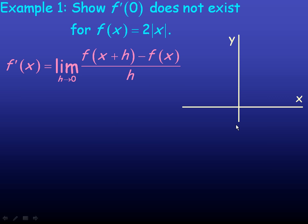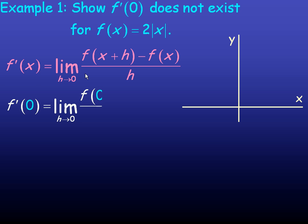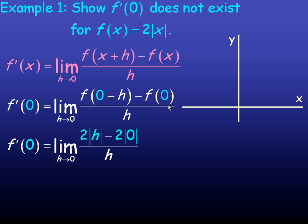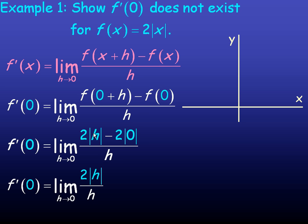In Example 1, we'll show that f prime of 0 does not exist for the function f of x = 2 times the absolute value of x. Using the first principles definition and putting 0 in place of x, we get f of 0 plus h equals 2 times the absolute value of h, and f of 0 equals 2 times the absolute value of 0, which is 0. This simplifies to the limit of 2 times the absolute value of h over h as h tends to zero.